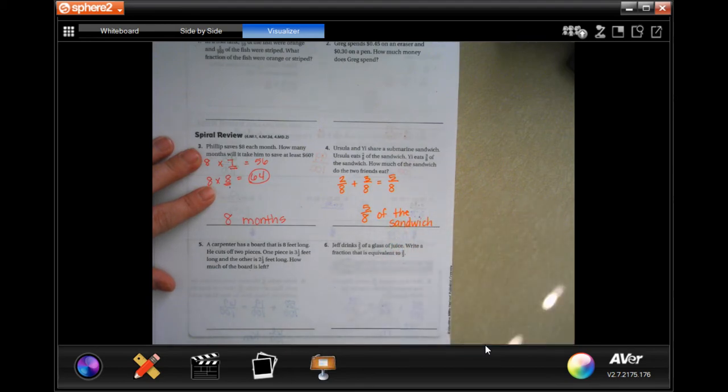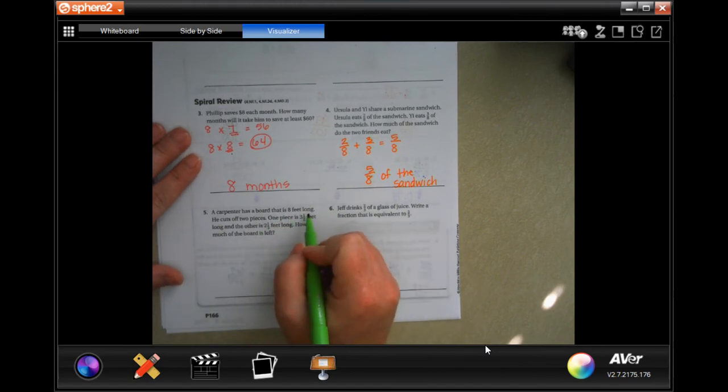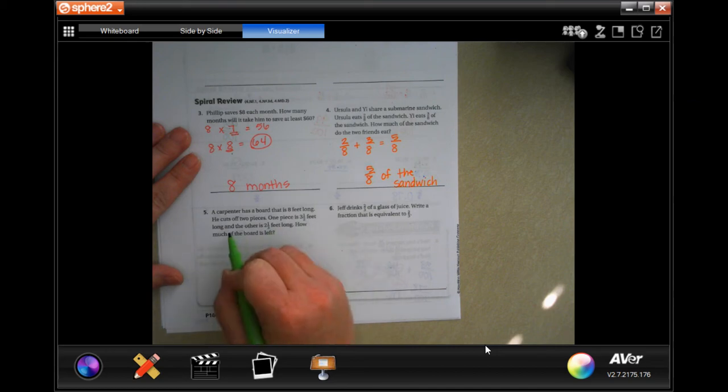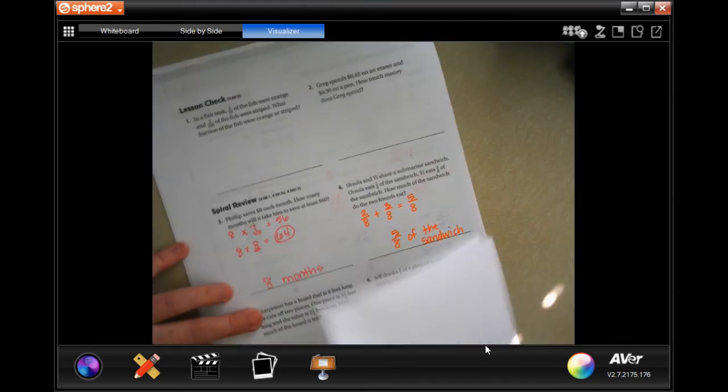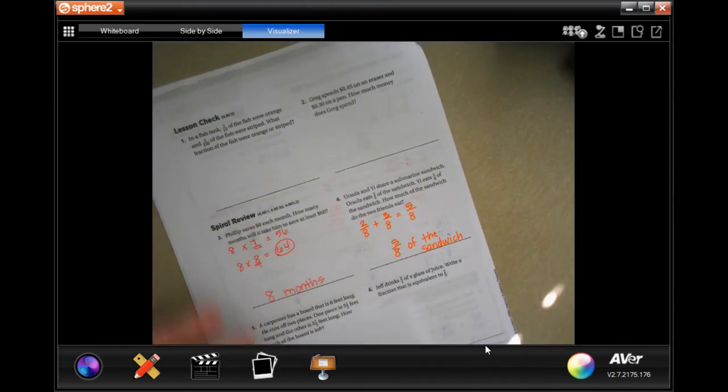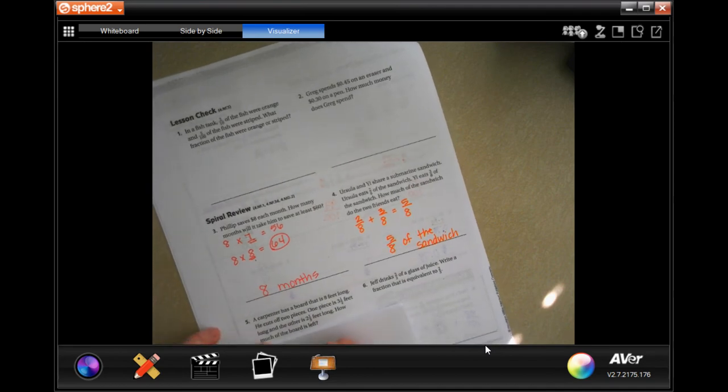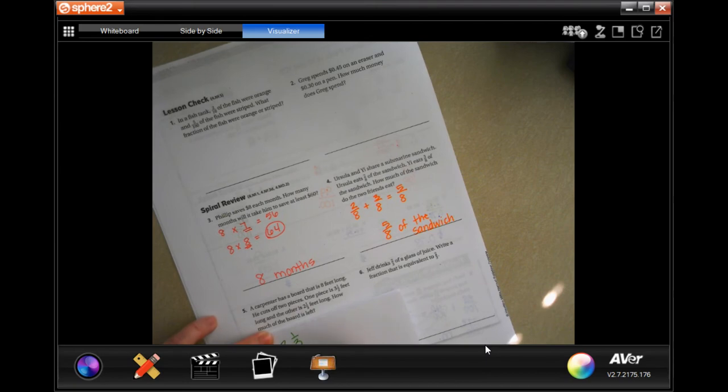A carpenter has a board that is 8 feet long. He cuts off two pieces. One piece is 3 and 1/2 feet long and the other is 2 and 1/3 feet long. How much of the board is left? Well, first, we're going to find out. I'm going to use scrap paper for this one. We're going to find out how much he cut off. So, 2 and 1/3 and we're going to add to that 3 and 1/2.